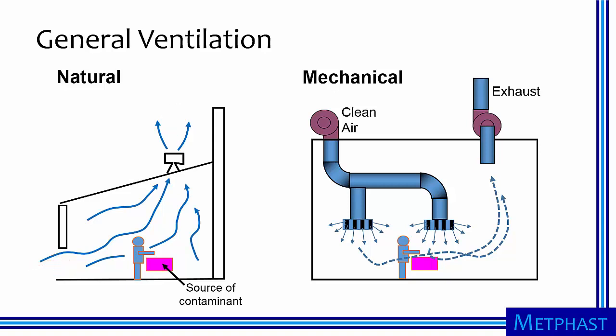General ventilation can also be achieved mechanically. In the case shown at right, clean air is pushed into the building through ducts and discharged near the workplace floor. This air is then pulled out of the building and exhausted through a stack. Alternatively, this air can be cleaned and recirculated to reduce heating and cooling costs.